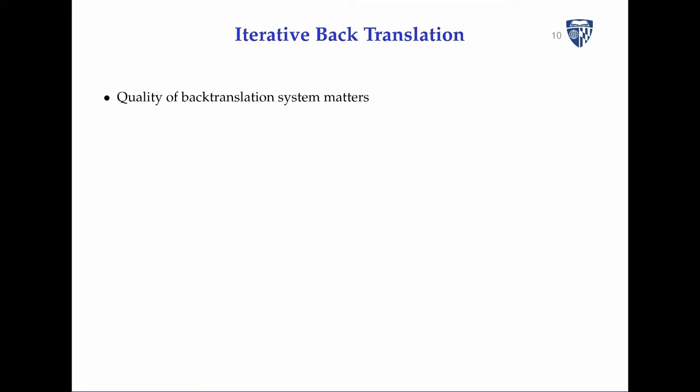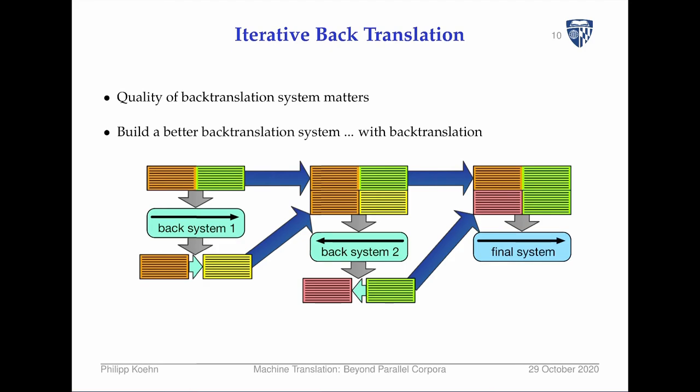We can continue this process in what's called iterative back translation. The quality of the back translation system matters — if you build a better back translation system, you get better synthetic data to train on. So how do we build a better back translation system? By also having back-translated data for that. We start with our first back translation system, use it to translate monolingual text in the source language, and then build an improved back translation system.